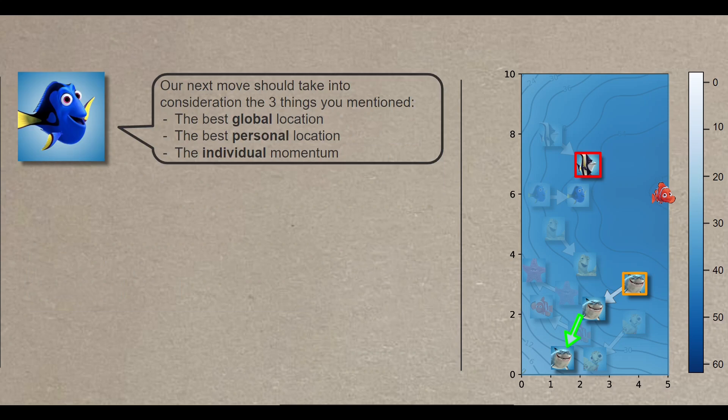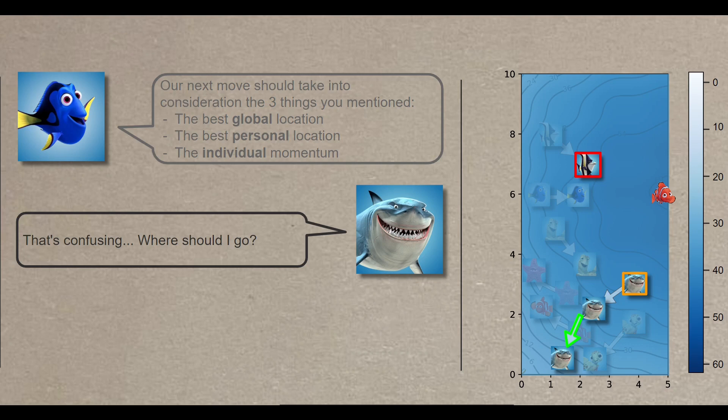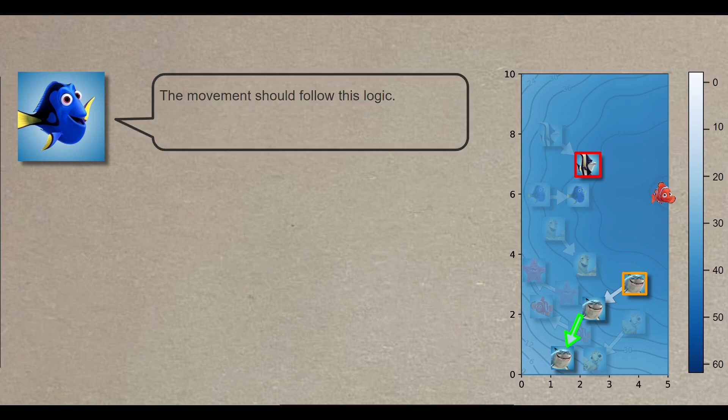Let me explain. Our next move should take into consideration the three things you mentioned, the best global location, the best personal location, and the individual momentum. Well, that's confusing. Where should I go? Let me explain. The movement should follow this logic.